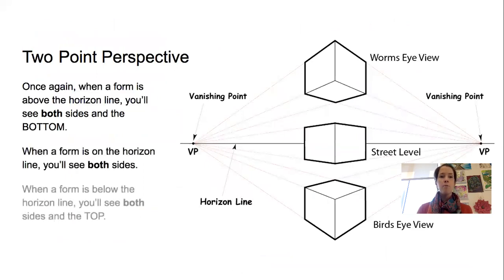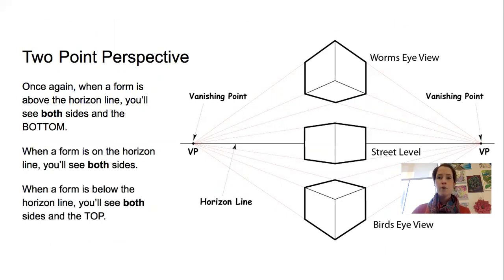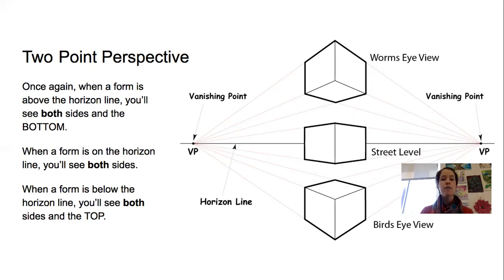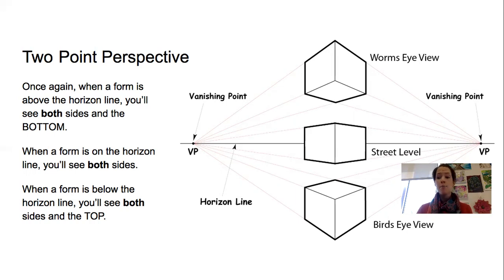Just like with one point perspective, if your form is above the horizon line, above the vanishing point, you will see both sides and the bottom. When a form is on the horizon line, you won't see either top or bottom — just the sides. When a form is below the horizon line, you'll see the sides and the top. Where something is in relation to the vanishing point and horizon line always dictates what parts of that form you see, because you use your vanishing point to create diagonal lines that become the tops, sides, or bottoms.